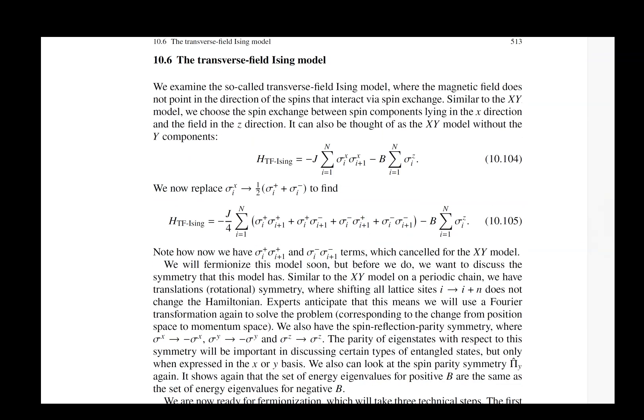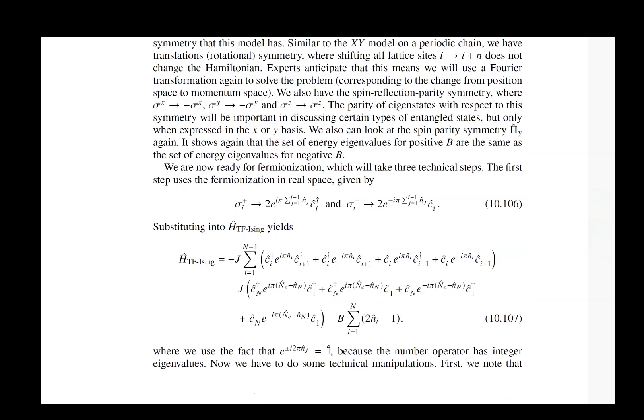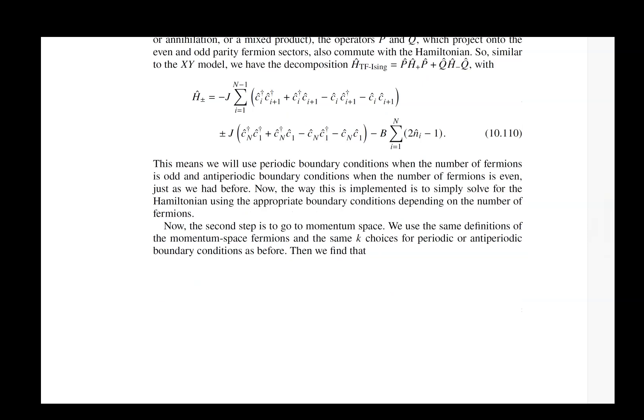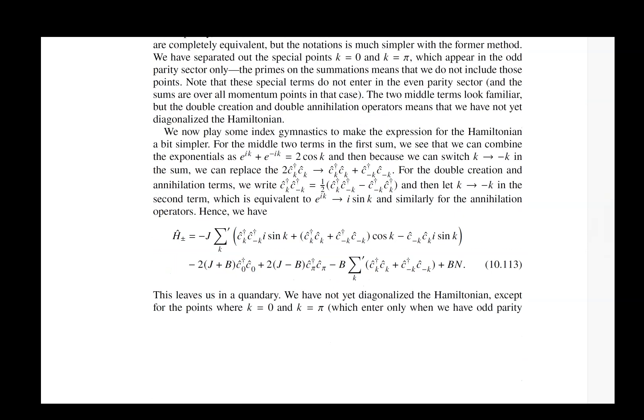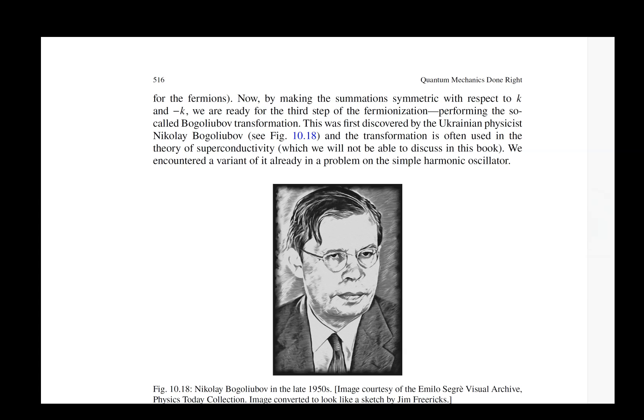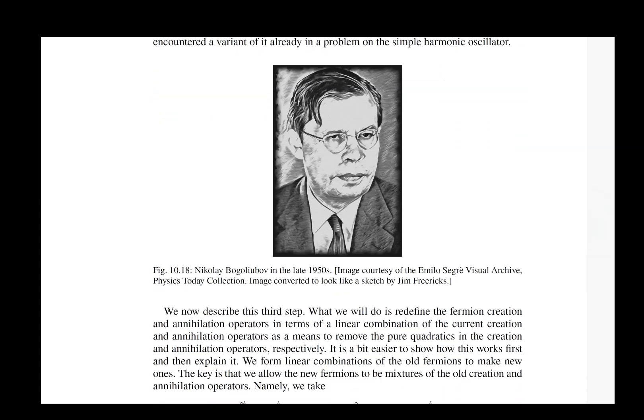We then move on to the transverse field Ising model. This is one of the most heavily studied models in quantum mechanics, particularly looking at the dynamics of different kinds of transverse field Ising models in numerics. People love to do this because the numerics is not that hard, but it has in it a lot of the general properties that interacting quantum systems have. So this is a model that lots of people love to study. We give you a nice introduction to this here, and we also show you how you solve it with fermionization.